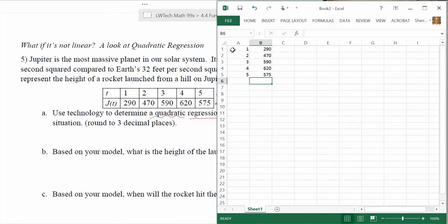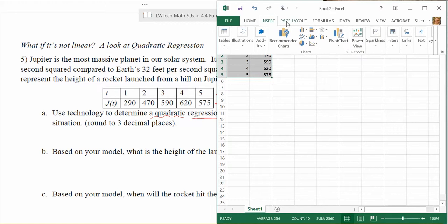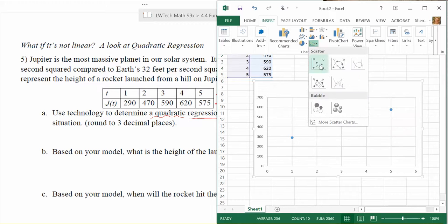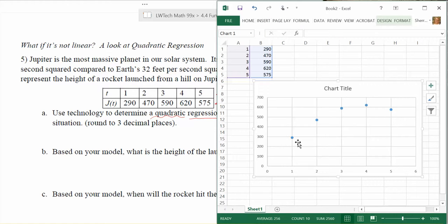Once you have all the data entered, we're going to highlight everything. We're going to go to the insert menu and we want to do a scatter plot. Look under charts for the one that looks like a scatter plot and choose the first option there. When you look at the dots here, you can see that a parabola is going to be a great fit for it. See how it comes up like this and comes back down. We could make a pretty smooth looking parabola out of those dots.